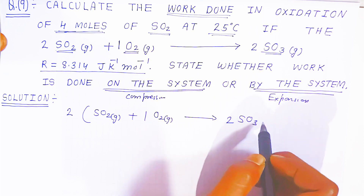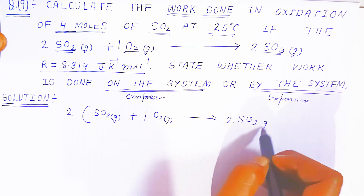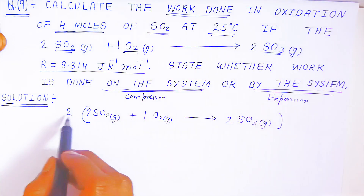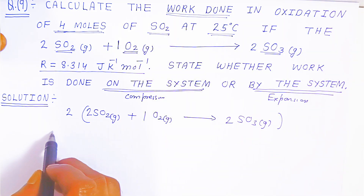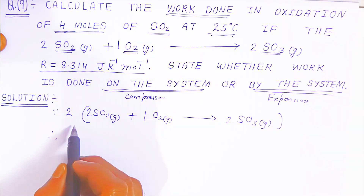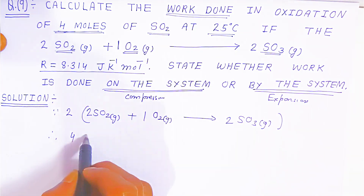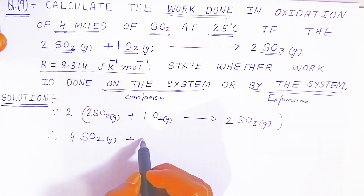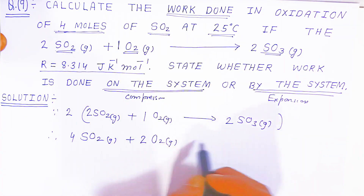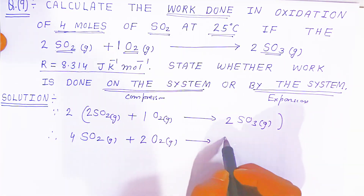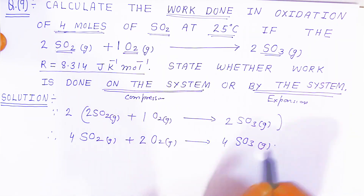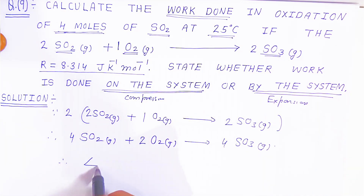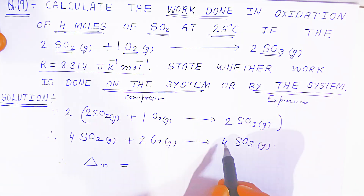Multiplying by two: four moles of SO₂ gas combines with two moles of O₂ gas, producing four moles of SO₃ gas. This is our scaled balanced equation for four moles of sulfur dioxide.